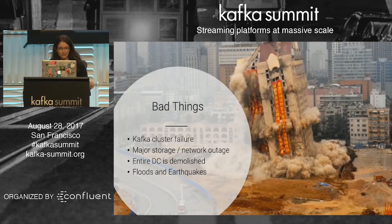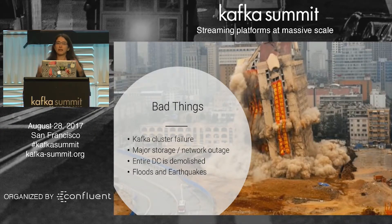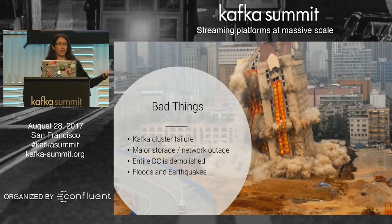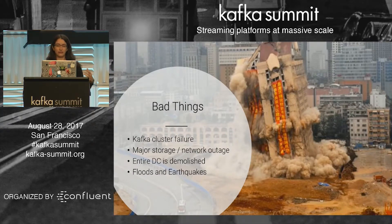A lot of this talk is basically all the things I wish my customers knew before they called me with questions. Back to the bad things that can happen to your Kafka cluster: the first thing that happens quite often is that your Kafka cluster just fails — something went out of sync, the controller went into a bad state, some replicas are down. You try restarting and suddenly a bunch of workers don't come up, and you spend the next 12 to 36 hours trying to figure out what's going on.